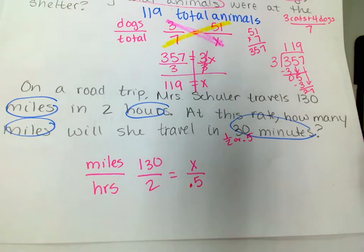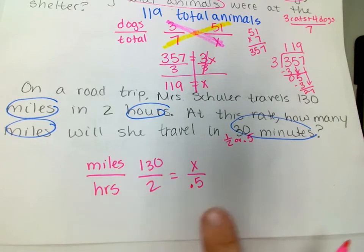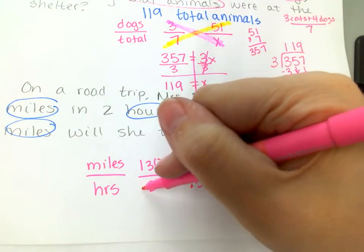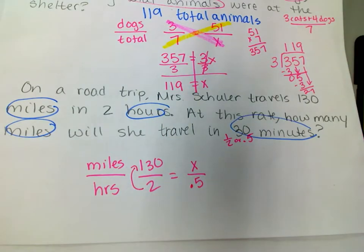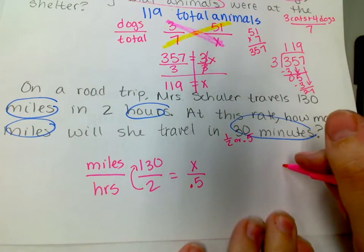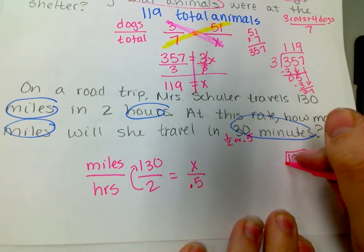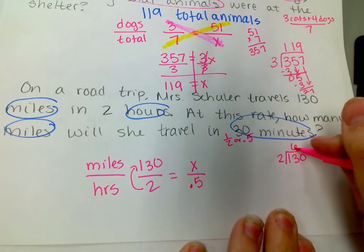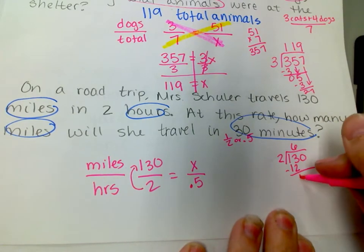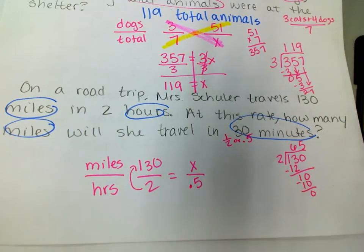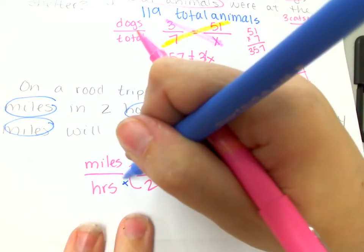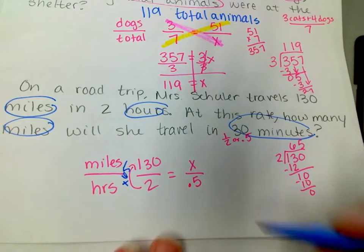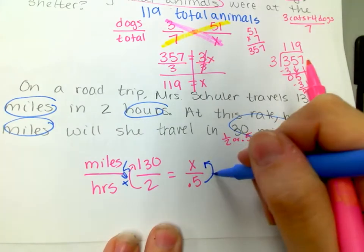Okay, so I can look for a relationship from here to here, here to here. Okay, there's a lot of different ways I can do it. So let's say that I want to know what am I doing from here to here. So I could do 130 divided by 2. 2 goes into 13 six times, which is 12. 2 goes into 10 five times. So that means I'm doing times 65. So that means here I need to do times 65.